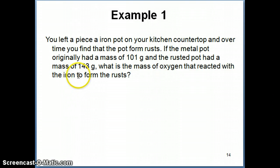So we're going to apply this in an example. It's a fairly straightforward example. It shows here that you have an iron pot, a pot that your grandmother used or your mother used, one of these pots that is completely made of iron. You put it on the kitchen countertop and over time you notice that the pot started to rust.